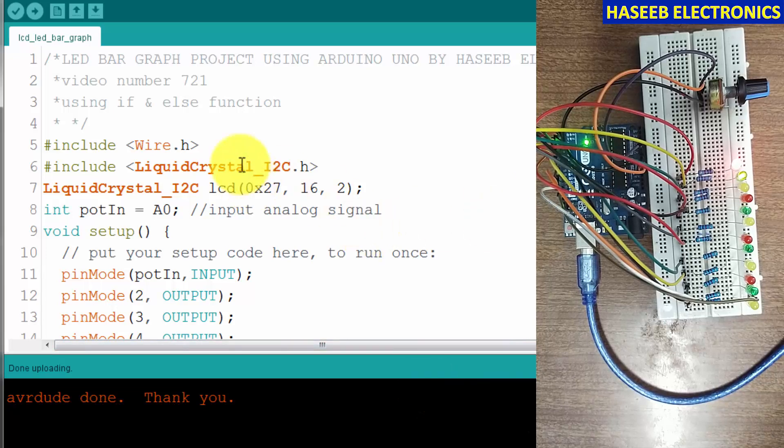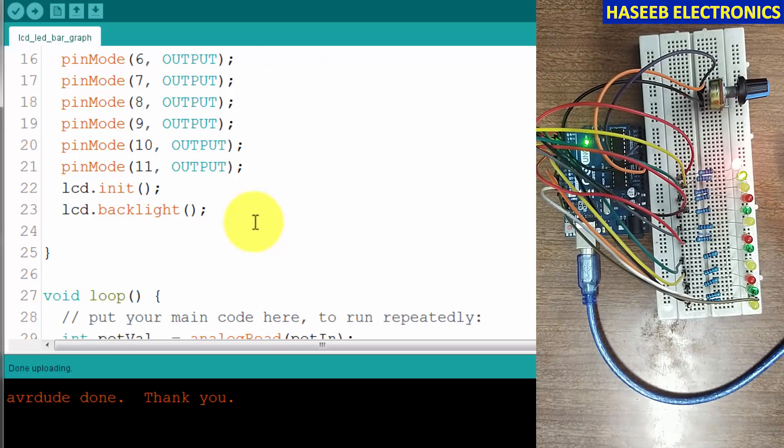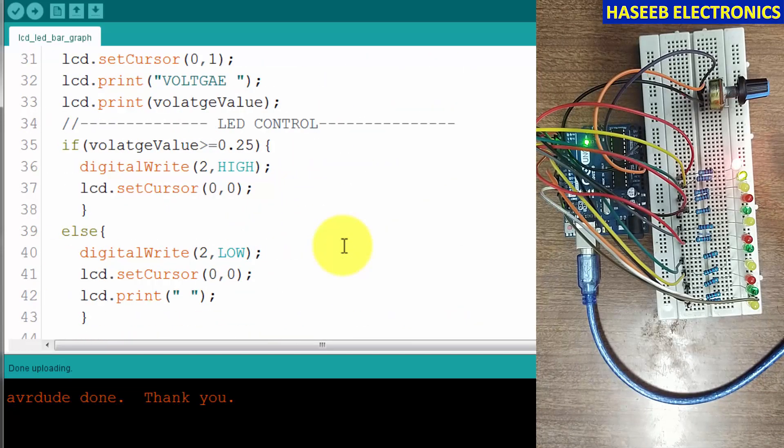Friends, welcome back to my channel. In video number 721 we wrote the code for this LED bar graph, and in that project we used if and else function. The benefit of if and else function is that we can allocate a specific voltage level to turn on each LED when the condition is true.